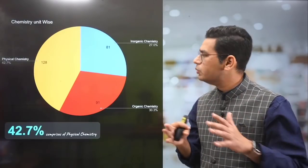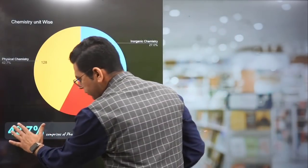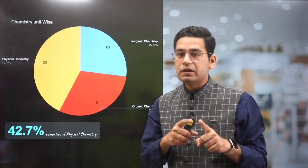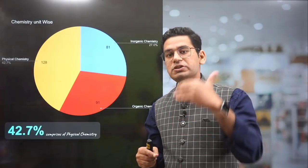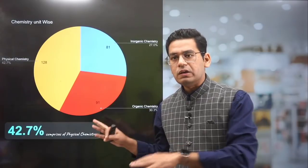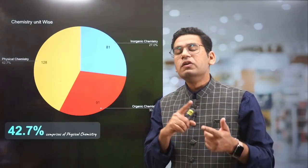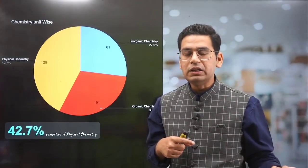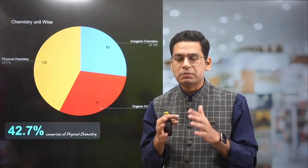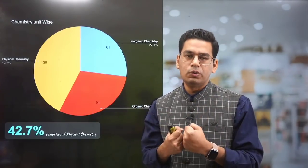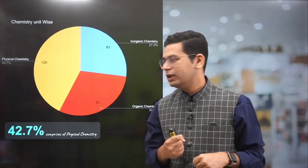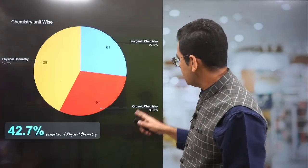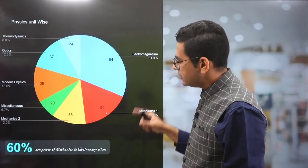Now the weightage of units: in chemistry, 43% of the paper comprises physical chemistry. This is a bit different from JEE Mains, where they generally divide equally into one-third each. Here more preference is given to physical chemistry, which makes the paper a bit lengthy but highly scoring also, because physical chemistry is something a lot of people are able to get hold of. Organic is 30% and inorganic is 27%.